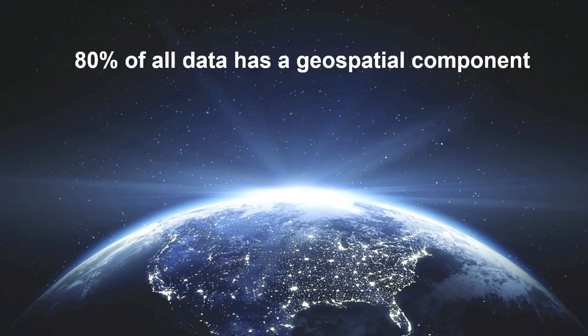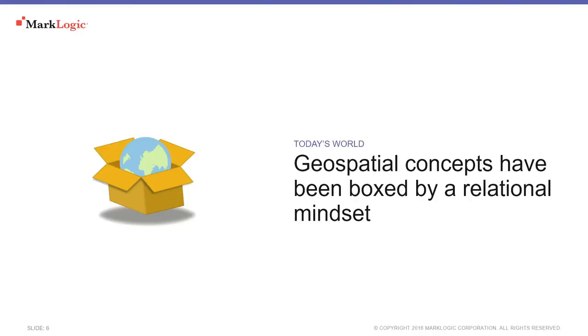And before we go through into how MarkLogic does stuff differently, what I'd like to spend just a few minutes doing is thinking about the state of geospatial technology today and really how we've arrived at this state. So geospatial technology isn't alone in that over its evolution it's borrowed tools, techniques, even concepts from other technologies. And a good example from the geospatial field is the concept of something called a feature. So you can think of a feature as something which can be mapped. And you could argue that the way that we think and the geospatial community generally thinks about the concept of a feature has been limited by this relational mindset.